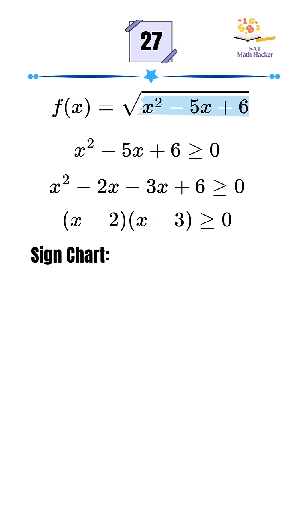First, find the critical points by setting each factor to zero. We get x equals 2 and x equals 3. This divides the number line into three intervals: negative infinity to 2, between 2 and 3, and greater than 3.